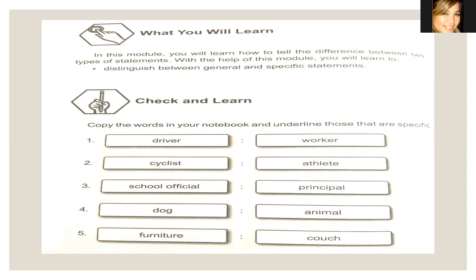When we talk about general, that means as a whole — the overall. When we say specific, it's the idea being pointed out — the main thing that wants to be highlighted or pointed out.